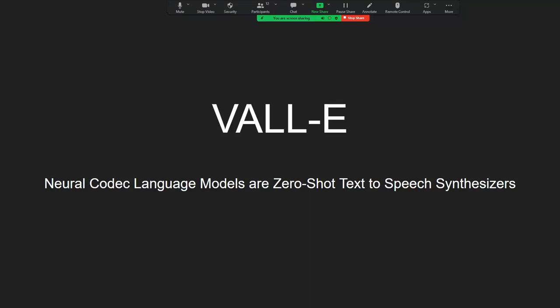Today we're going to talk about VALL-E, which is a neural codec language model, or zero-shot text-to-speech synthesizer. Neural codec is just a model that does translation for us. Zero-shot means once you get the model trained, you can give it text and it doesn't actually train from the text — it just uses it and synthesizes speech from that.